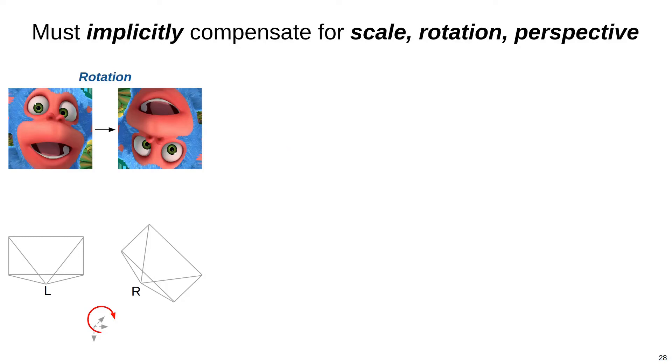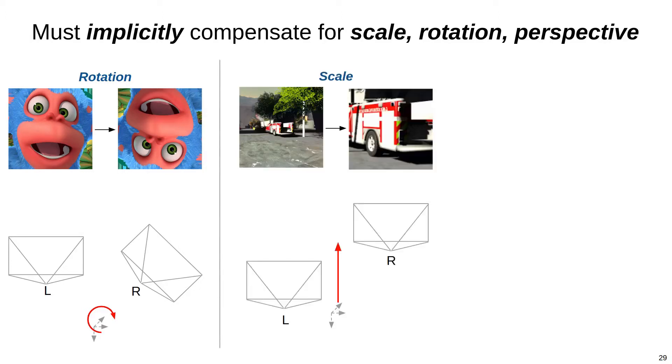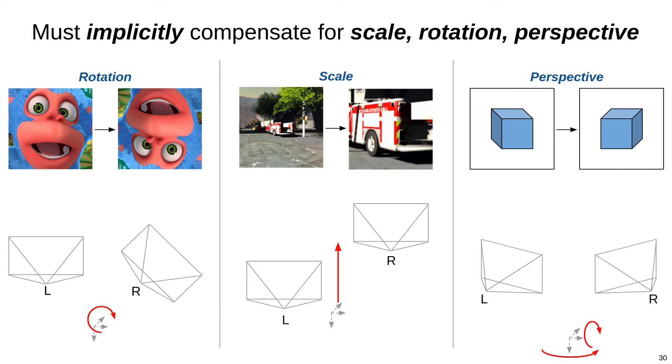There are several types of warps that can affect images in an MVS setting. The simplest is rotation, where the second camera is rotated along its optical axis relative to the reference camera. There are also scale transformations, where the second camera is translated along the optical axis of the first camera. Finally, there are general perspective transforms that occur when the second camera is yawed or pitched relative to the first camera. Again, projecting the features after extraction means that the feature network must implicitly compensate for all the scale, rotation, and perspective changes.